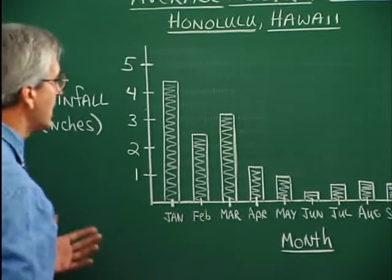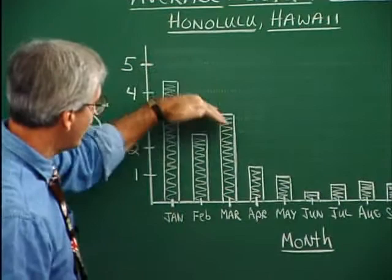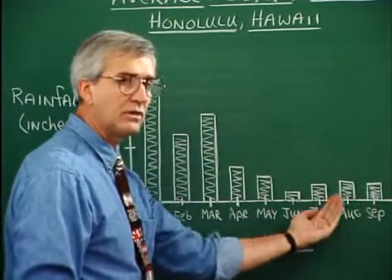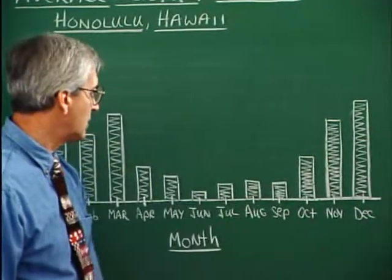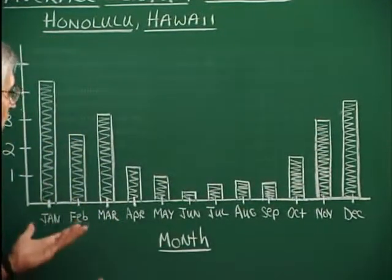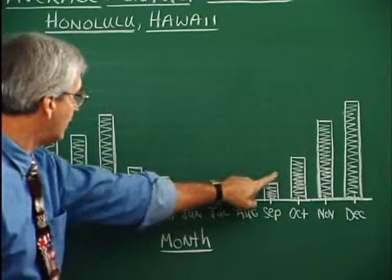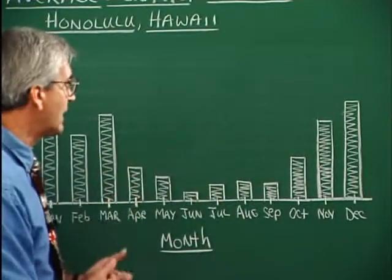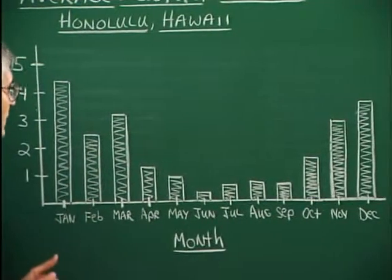From this we're noticing a downward trend from the first of the year. In the summer months, basically, the least amount of rainfall occurs, and then it starts to ramp back up as we get into fall and winter. So if we were deciding when to go to Hawaii, we might decide to go in a month of lesser rainfall. Even the high months in Honolulu don't represent a great deal of rain.